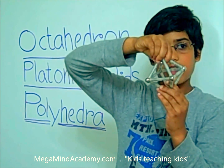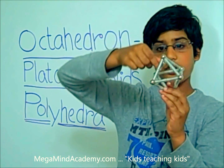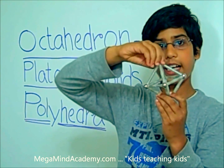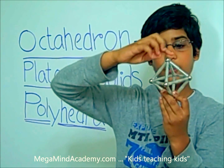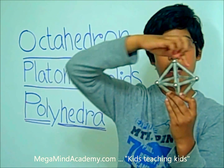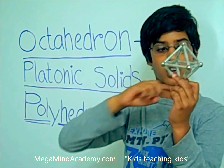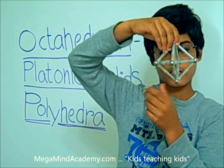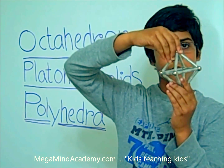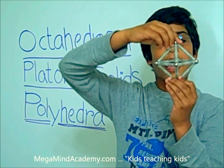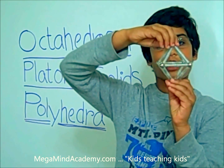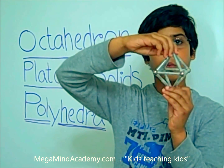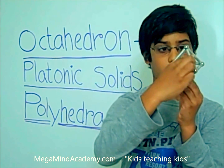On an octahedron, there are eight faces — four on the top and four on the bottom. As you can see, all the faces are an equilateral triangle.